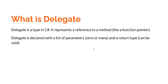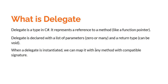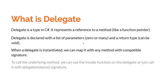Delegate is declared with a list of parameters — zero or many — and a return type, which can be void. When a Delegate is instantiated, we can map it with any method with a compatible signature. The method can be static or non-static. To call the underlying method for a particular Delegate, we can use the Invoke function on the Delegate, or we can just call it with the name of the Delegate along with the open-close braces signature.